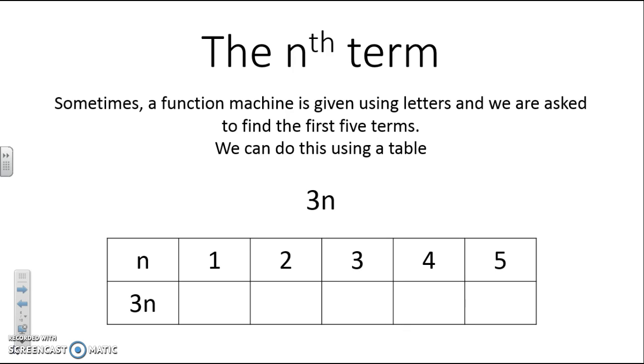That means we want the first term of a sequence, the second term, the third term, the fourth term, and the fifth term. For example, a two times table is a sequence and we would do one times two gives us two, two times two gives us four, three times two gives us six, and so on.